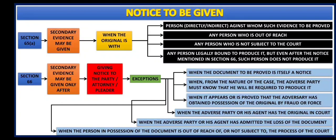First, let us revise Section 65A. Under Section 65 there are seven circumstances discussed where we can give secondary evidence, and the first one — Section 65A — says secondary evidence may be given when the original is with someone. We can give secondary evidence if the original is with the person against whom we are trying to produce such evidence. That person will not definitely give it, because once we get it, we will prove it against him. If that original is with him, in that case secondary evidence can be produced.